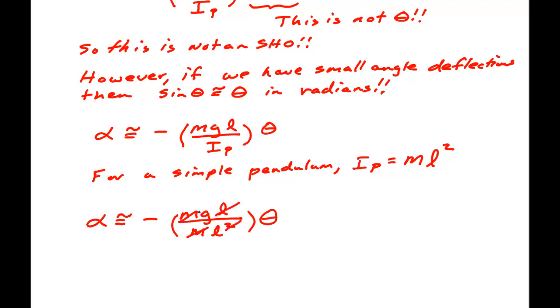Kill one of the L's and kill the M. And this is of the form alpha is approximately minus g over L theta.